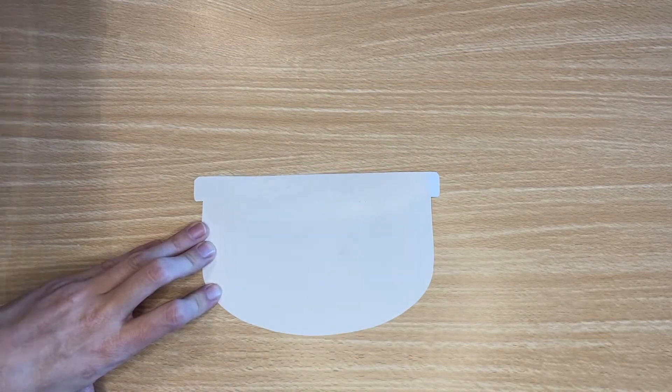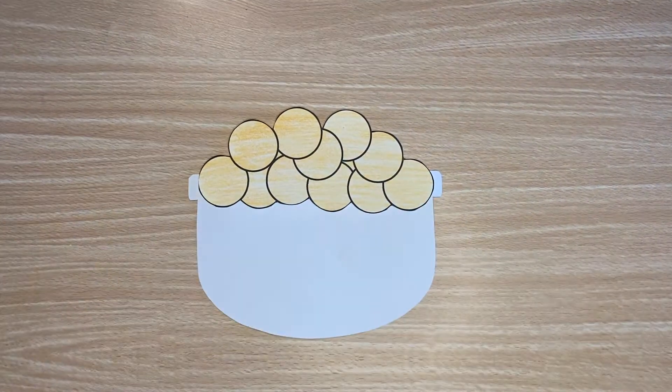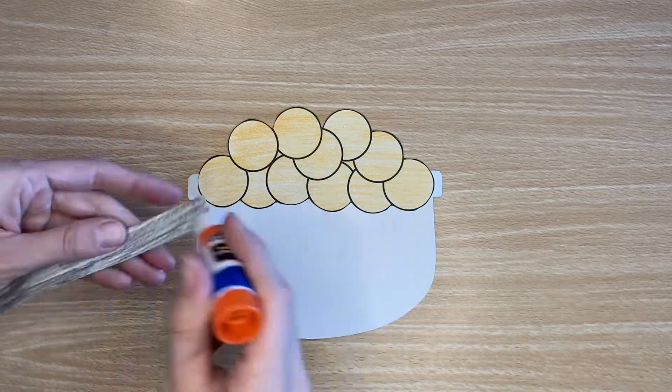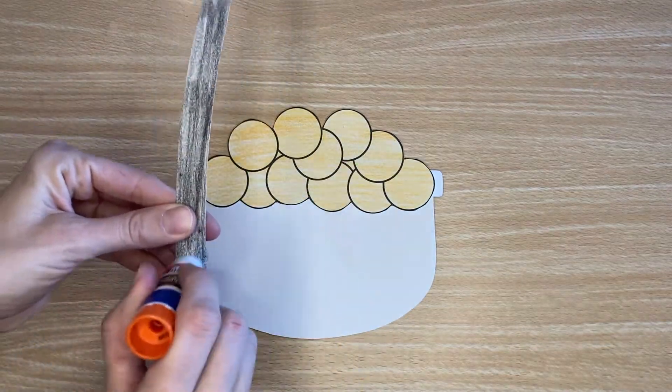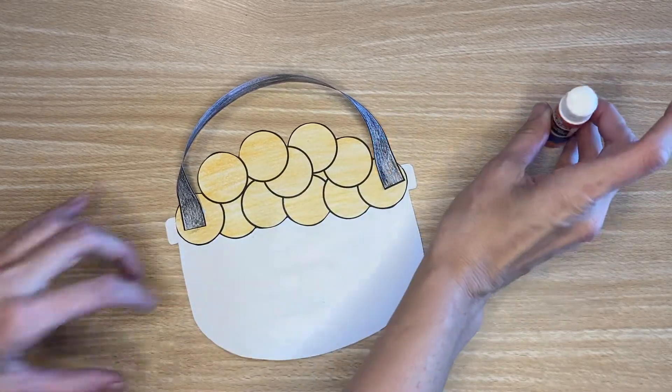Glue the gold at the top of the back of one of the pot of gold pieces. Then add the handle by gluing either end of the handle strip to the top of the pot of gold. Glue the front of the pot of gold on top of that.